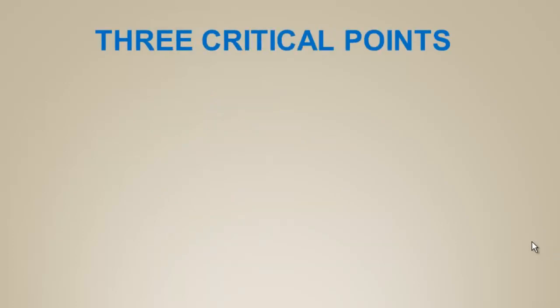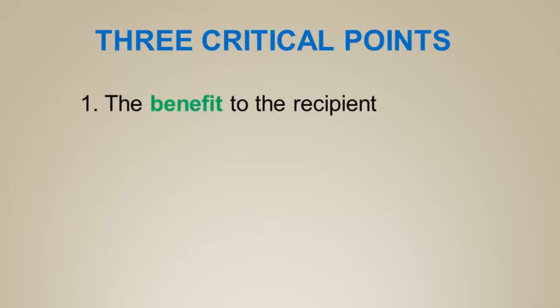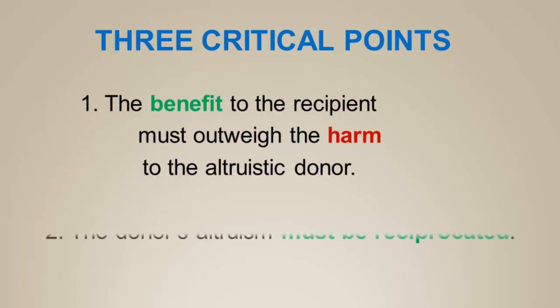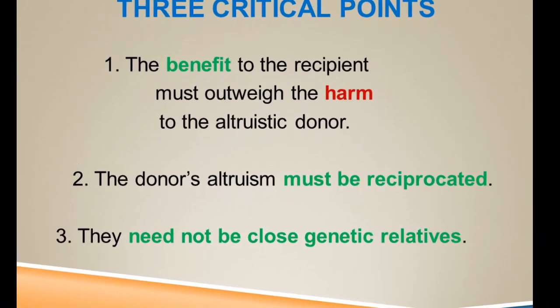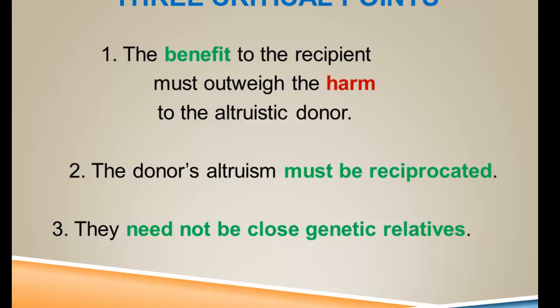There are three critical points to the argument of reciprocal altruism. First, the benefit to the recipient must outweigh the harm to the altruistic donor. Second, the donor's altruism has to be reciprocated — if you make an altruistic act and there's no reciprocity, you simply lose. Third, two individuals can engage in this and they need not be close genetic relatives.